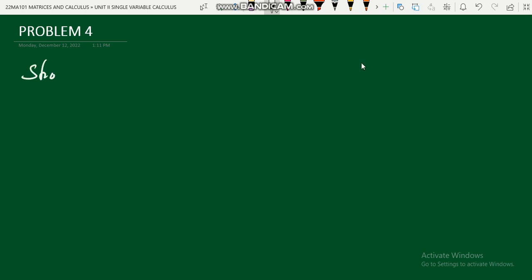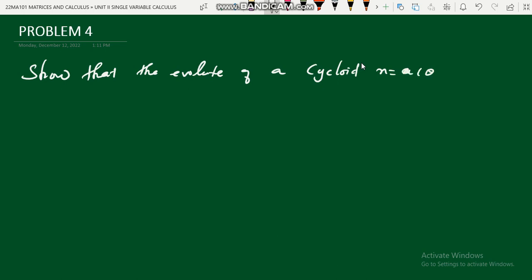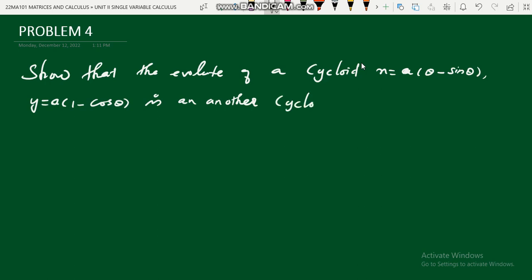Let me take the question: show that the evolute of a cycloid x = a(θ − sinθ), y = a(1 − cosθ) is another cycloid x = a(θ + sinθ), y = −a(1 − cosθ). This is the evolute we are going to obtain.